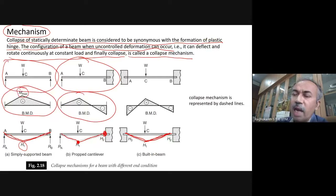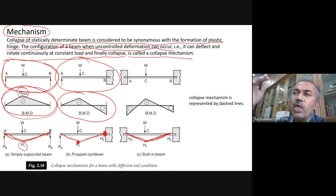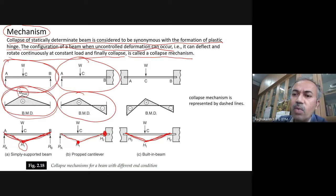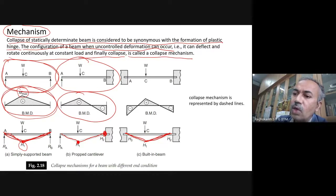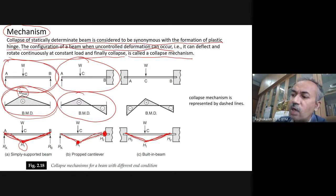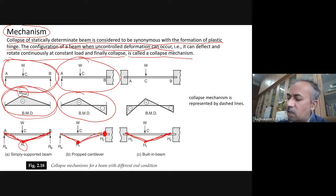The mechanism is essentially failure. For a simply supported beam, one hinge is sufficient for collapse. For a propped cantilever, two hinges are required. For a fixed-fixed beam, indeterminacy is two, so three hinges are required — one hinge here, one here, one here. How these hinges form depends on your bending moment: wherever bending moment is high, the first hinge forms there, then it spreads to other places.